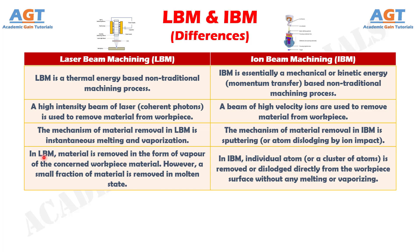Number 4. In laser beam machining, material is removed in the form of vapor of the concerned workpiece material. However, a small fraction of material is removed in molten state, whereas in ion beam machining, individual atoms, or a cluster of atoms, is removed or dislodged directly from the workpiece surface without any melting or vaporizing.